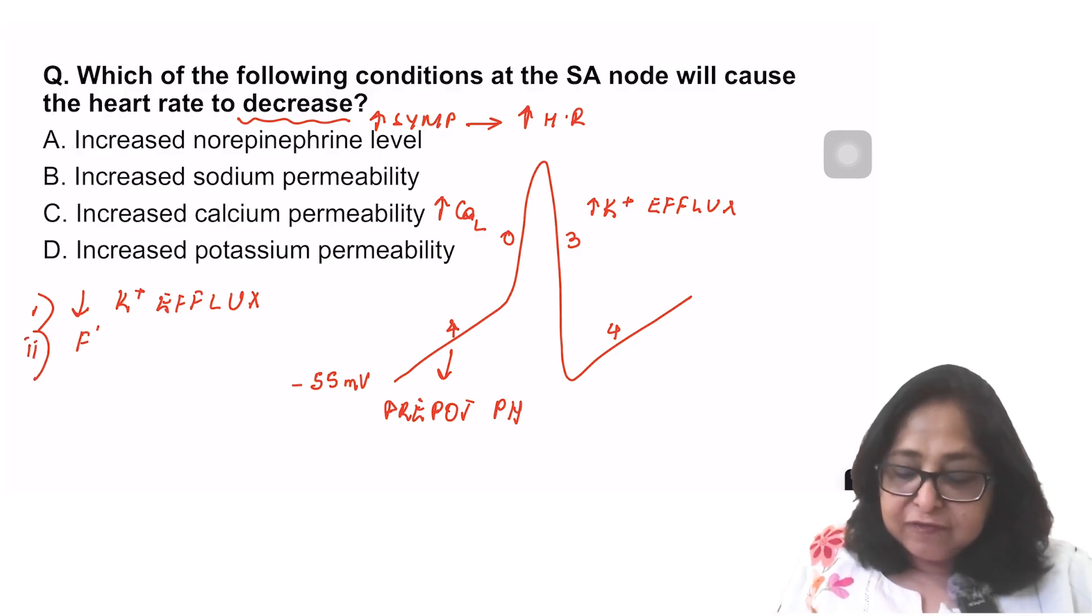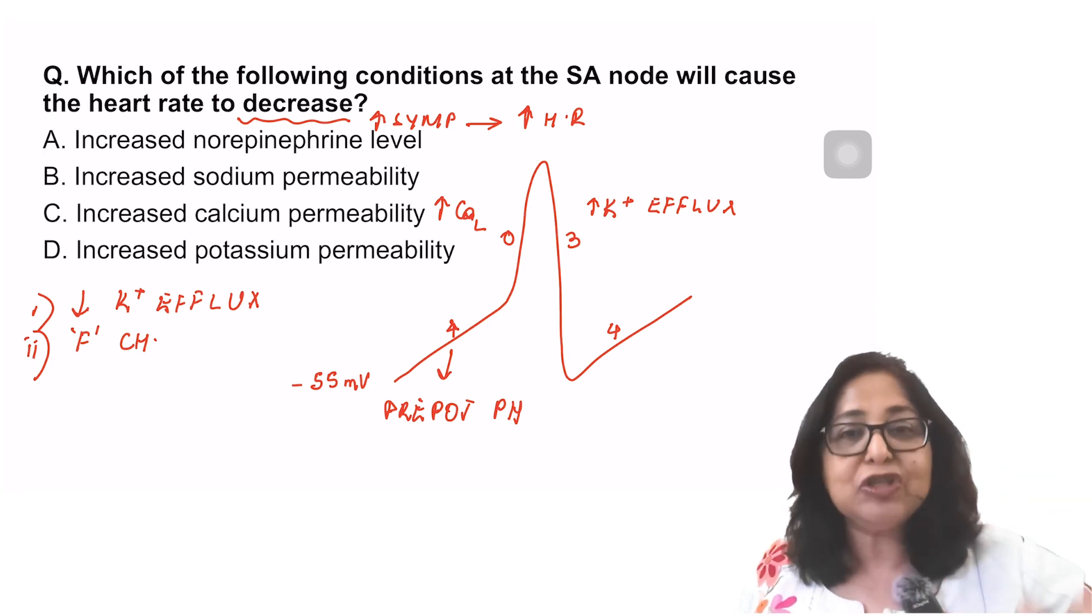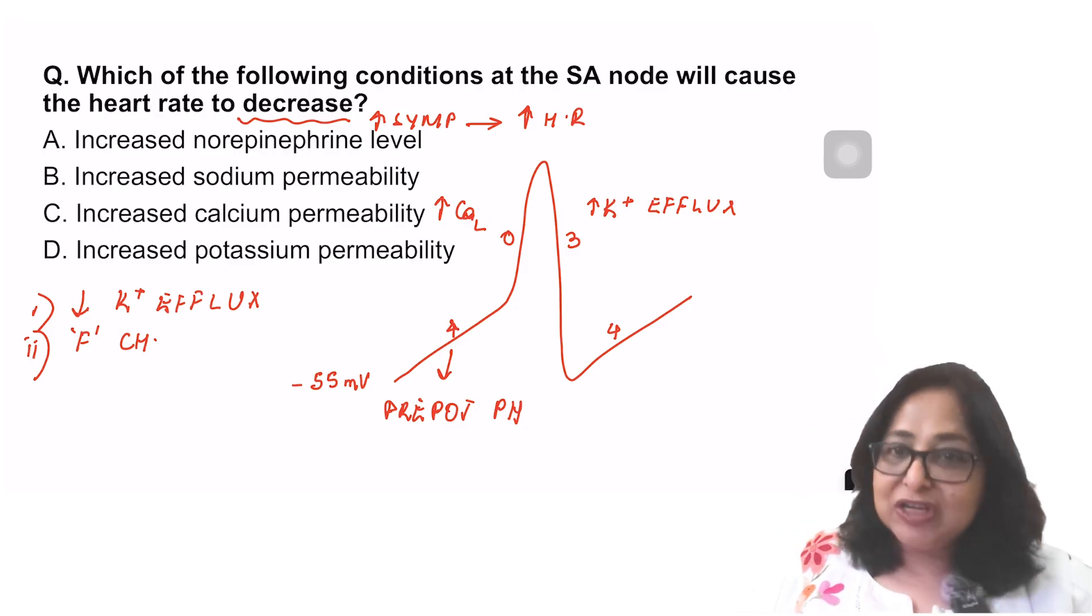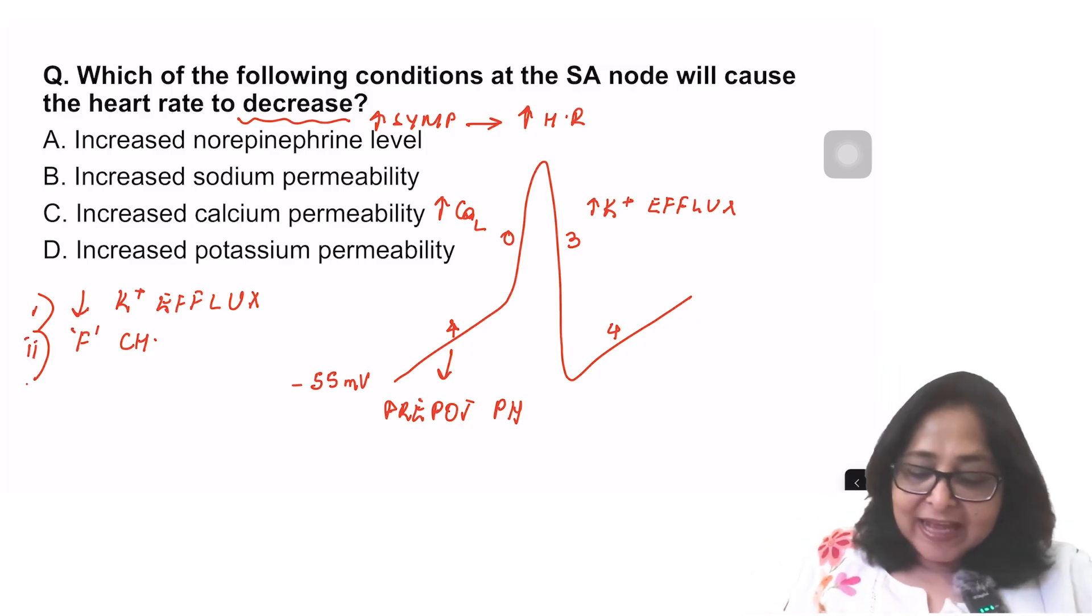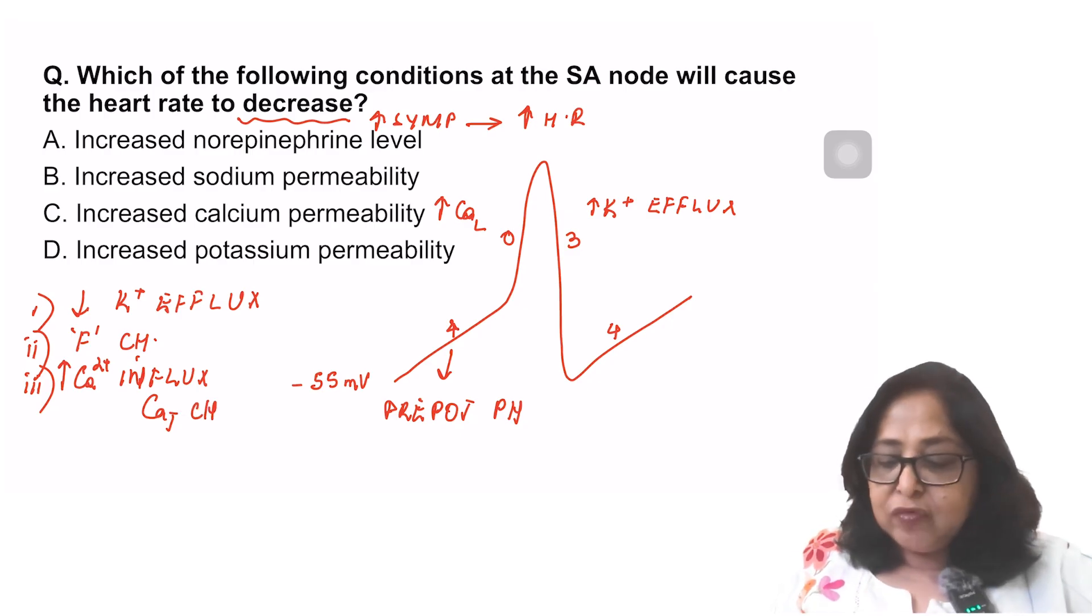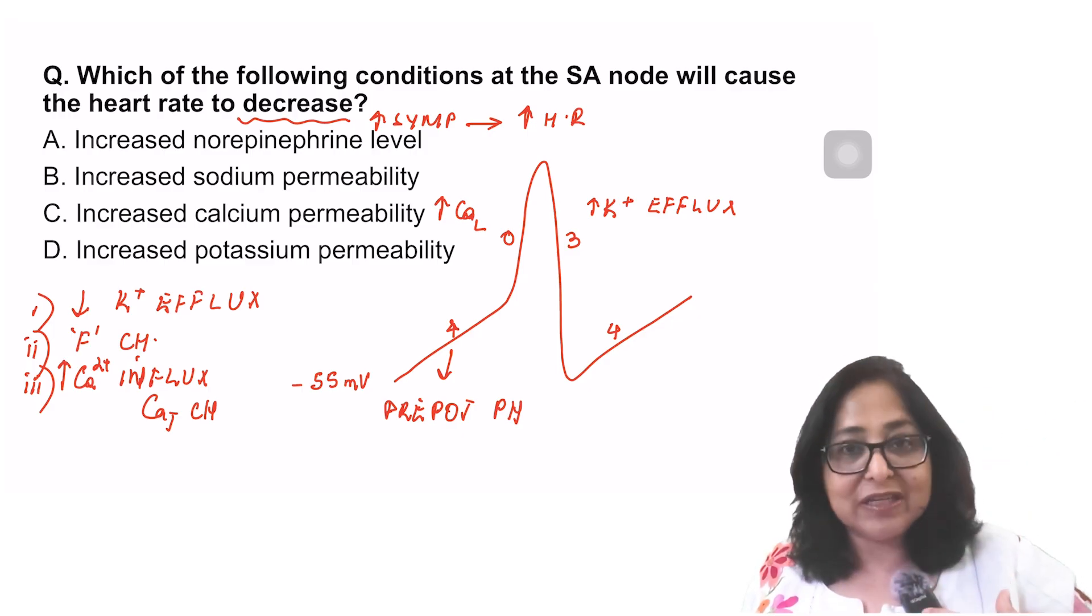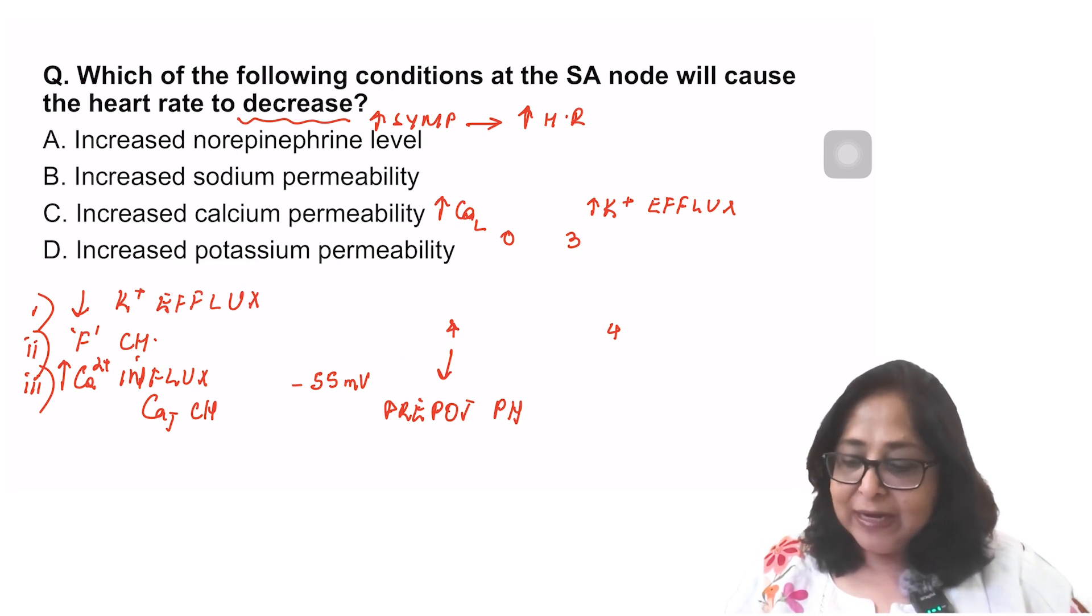Number two, there is opening of the funny channel in this phase. What is the funny channel? It permits movement of both sodium and potassium, but the movement of sodium predominates. That means sodium comes from outside to inside, cell is gaining positive charge. And the third is calcium influx through what are known as the calcium T channels. So by increasing calcium permeability or by increasing sodium permeability, the cell will gain more positive charge. So what will happen to the slope of the depolarization? Slope of the depolarization will increase. So faster depolarization means the heart rate will increase.